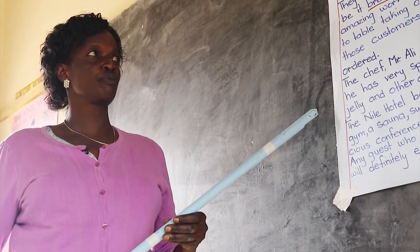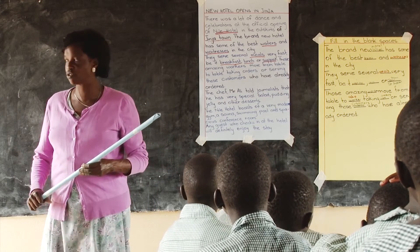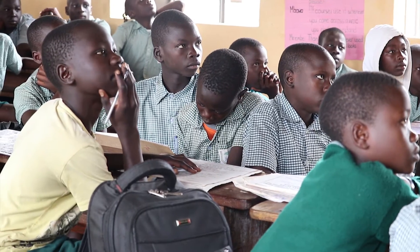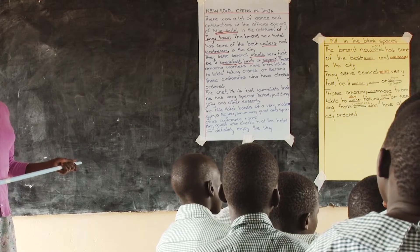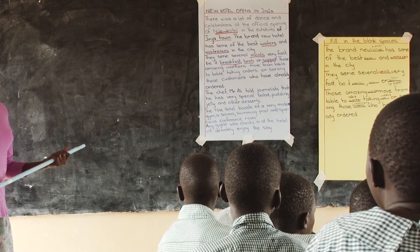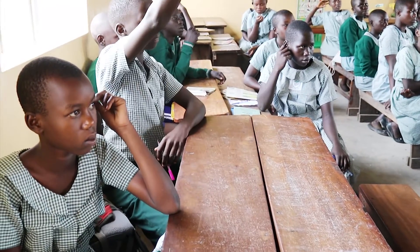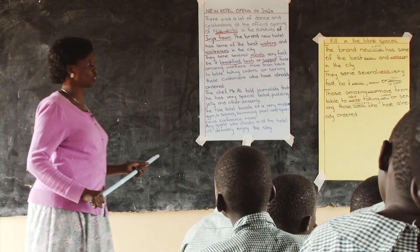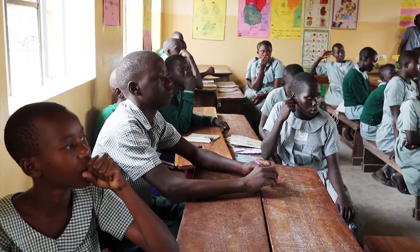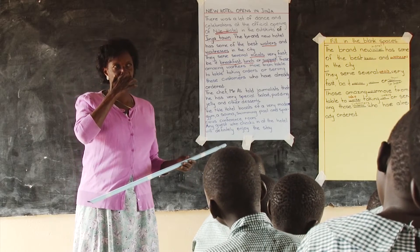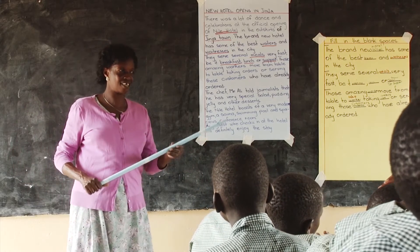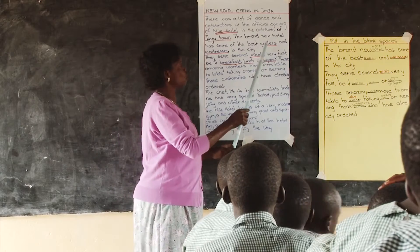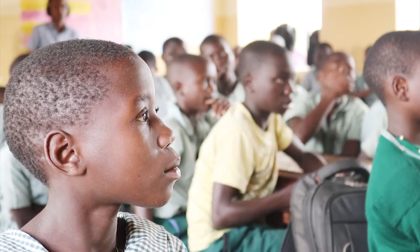For example, what word can you use for waiters and waitresses — people who serve food in the hotel? Students suggest: 'Workers,' 'people who serve meals.' The teacher responds that 'workers' is too broad. A student suggests 'servers.' The teacher confirms: 'You can use the word servers — you have shortened waiter and waitresses and used just one word: servers.'